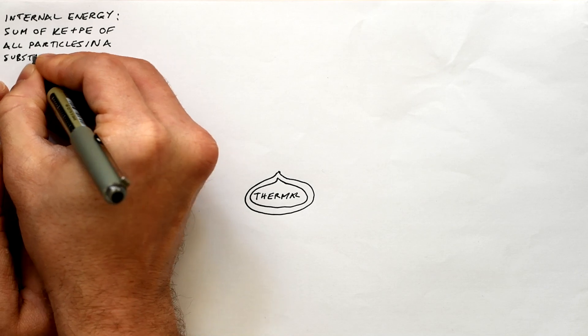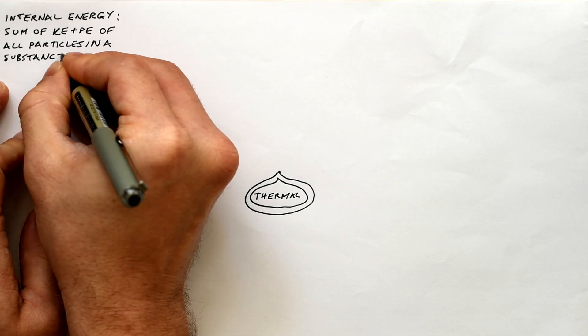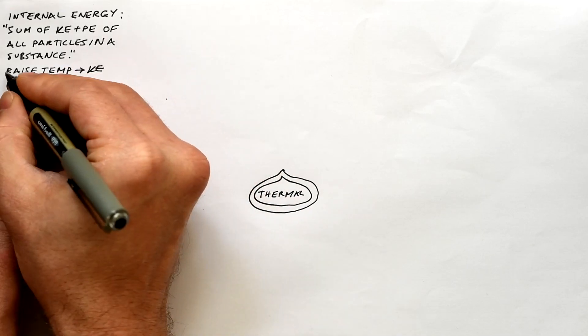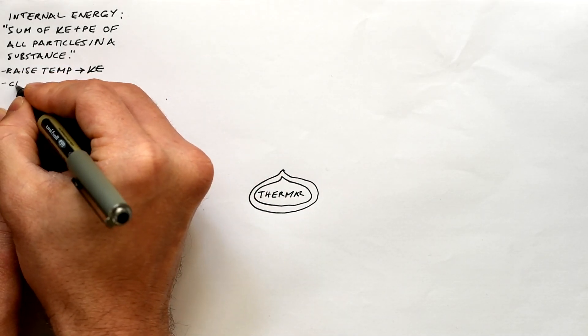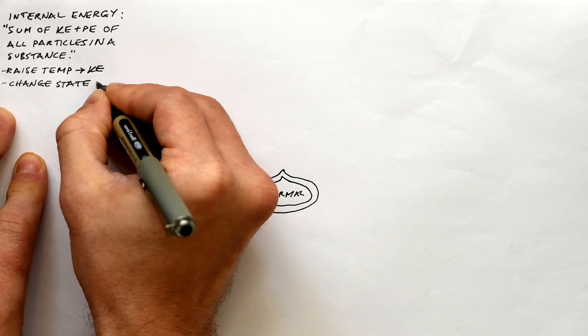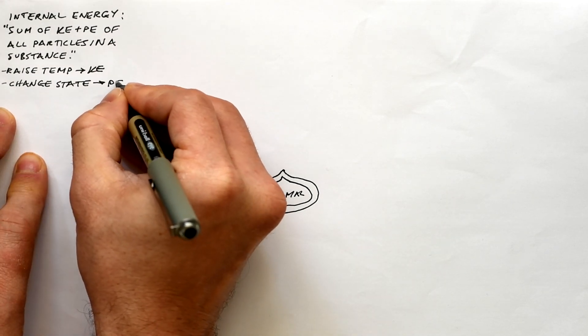Internal energy is the sum, that means total, of kinetic energy and potential energy of all particles in a substance. If we raise the temperature of a substance, the kinetic energy of the particles increases, and if we change the state of the substance, say from solid to liquid, liquid to gas, the potential energy of the particles increases.